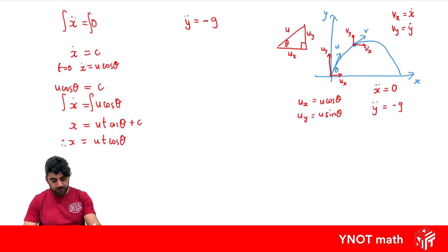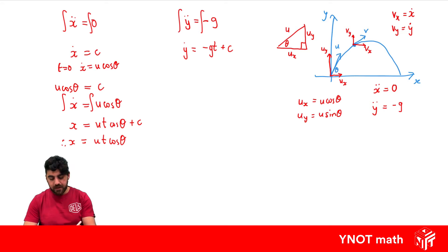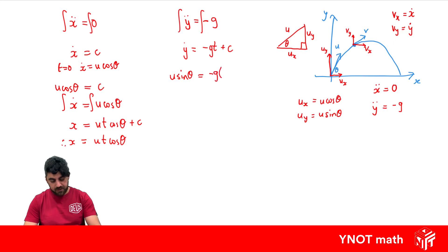Now let's do the same for y. Integrating y-double-dot with respect to time gives y-dot. Integrating minus g gives minus gt, plus a constant. When time equals zero, y-dot equals u sin theta, so c equals u sin theta. Therefore y-dot equals minus gt plus u sin theta.